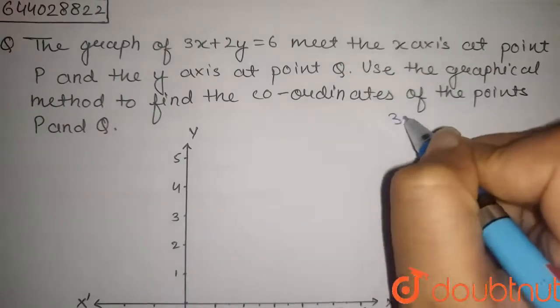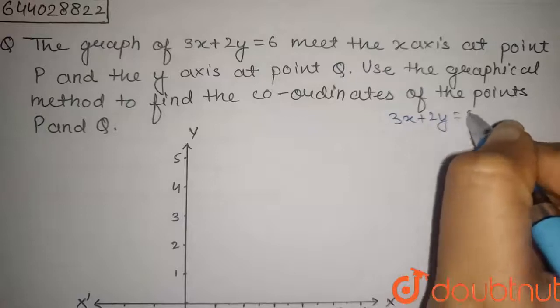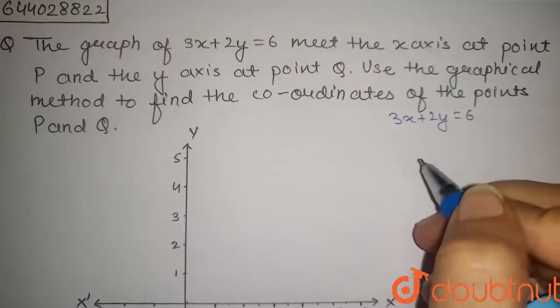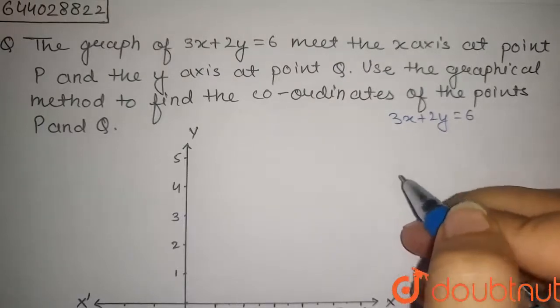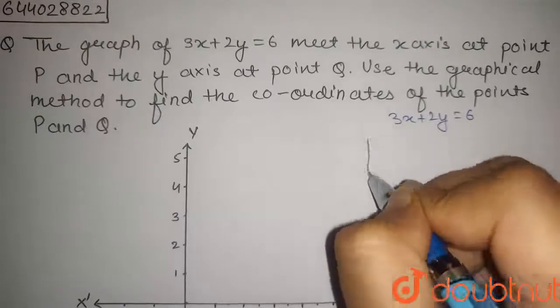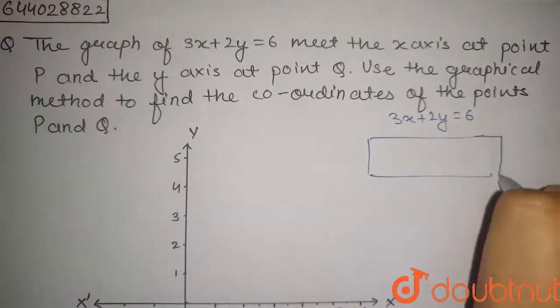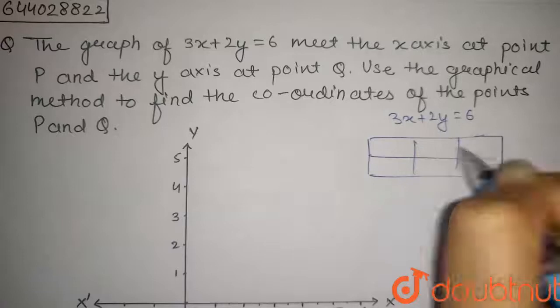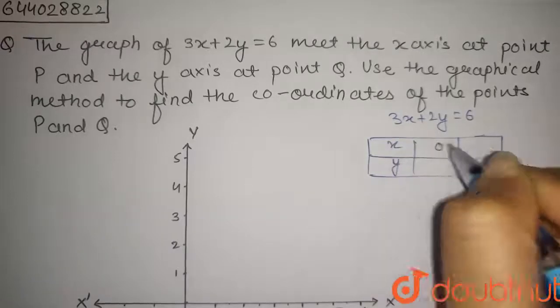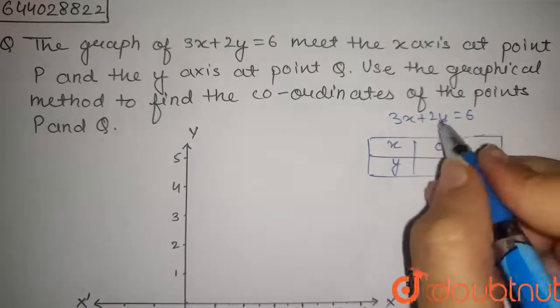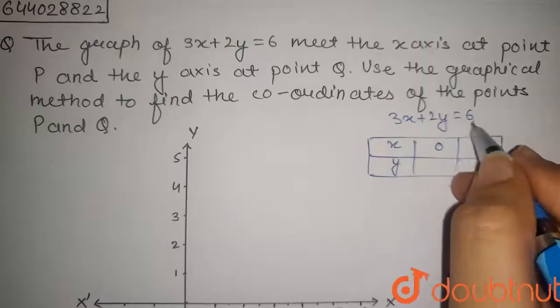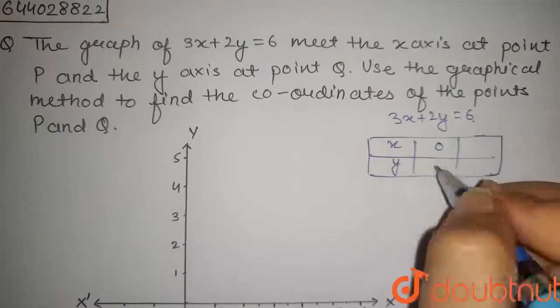We have the equation 3x + 2y = 6. To plot this on the graph, we need to find some points. If we put x = 0 in this equation, we get 2y = 6, or y = 6/2 = 3.